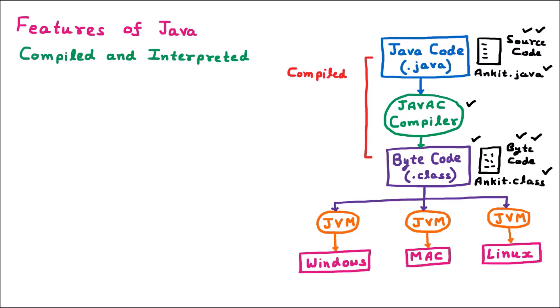Now, this byte code is very much secure and we can send it over a network. This byte code can be converted to machine code depending upon the operating system — for Windows, Mac, or Linux. Depending upon the operating system, we have the Java Virtual Machine. JVM converts byte code to machine code. Machine code, also called native code, is the low-level language which can run on the operating system. This is the interpreted phase or interpreter phase.